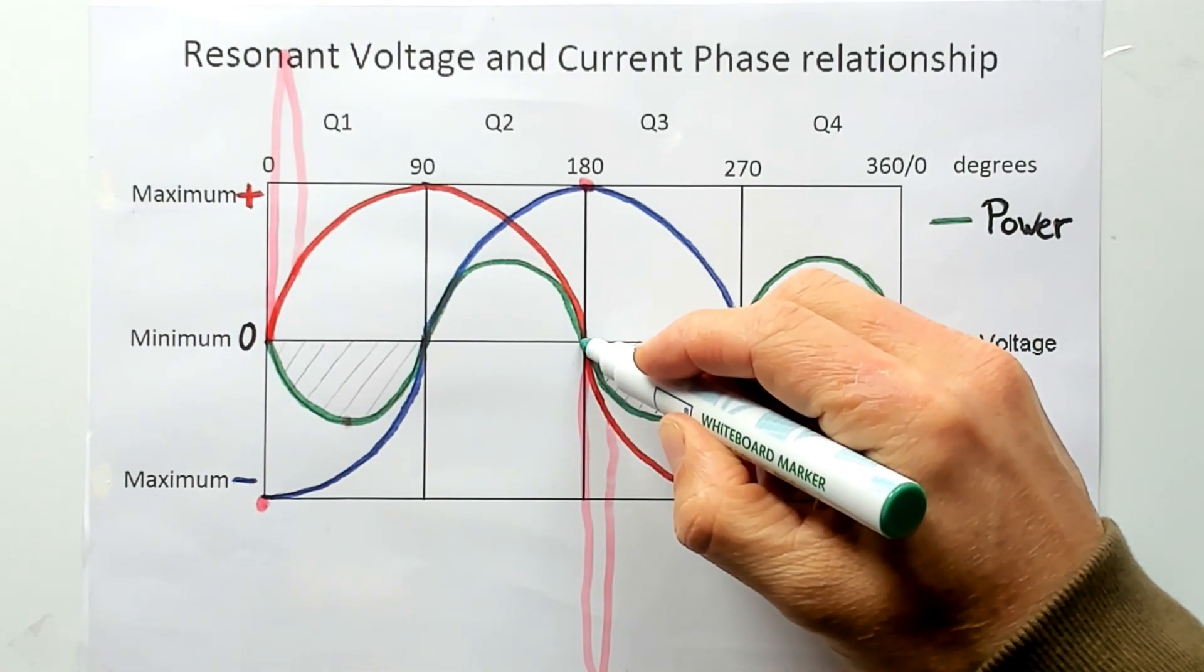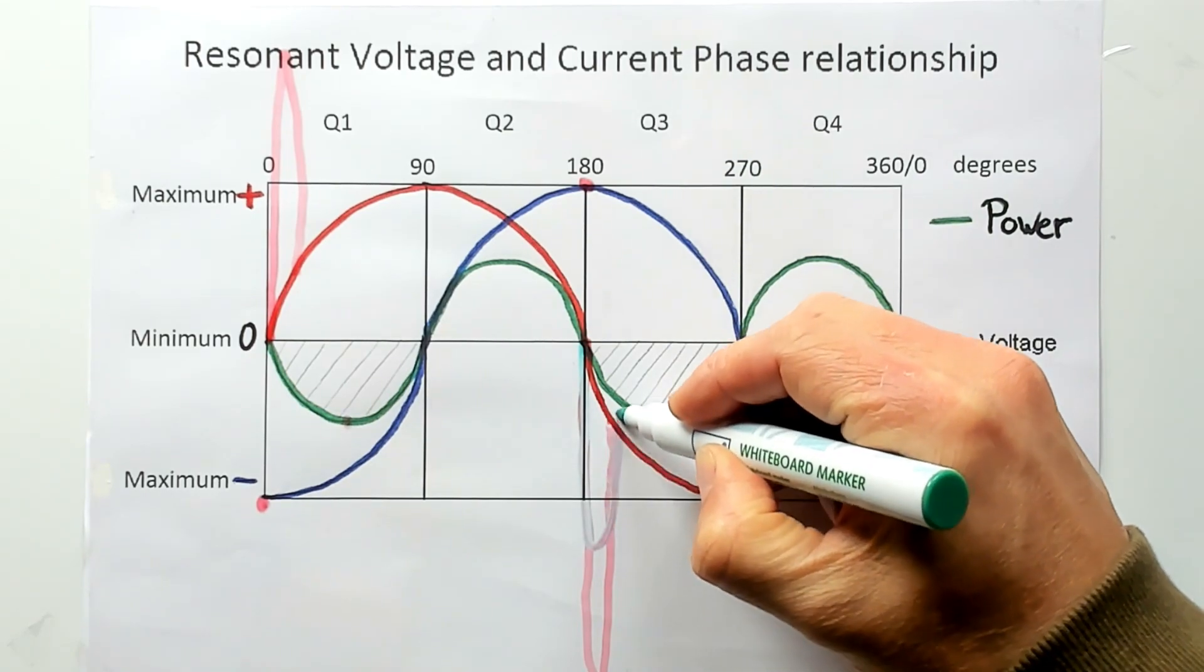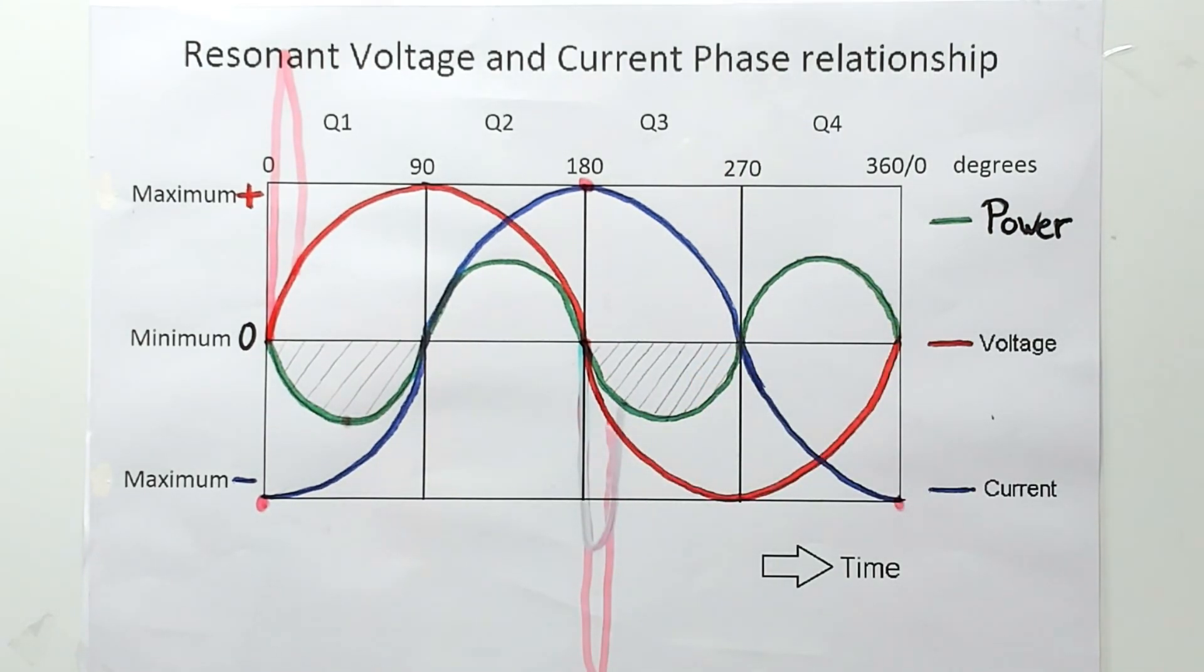So here will be a peak of power. Now that color is really awful. I'm gonna do it with blue. That's a lot better.